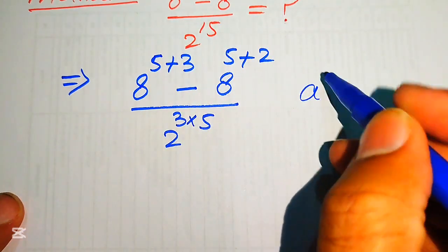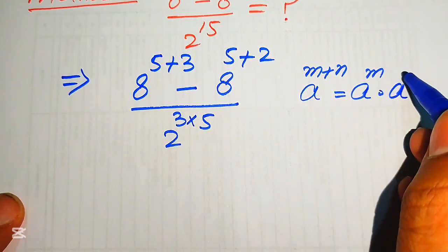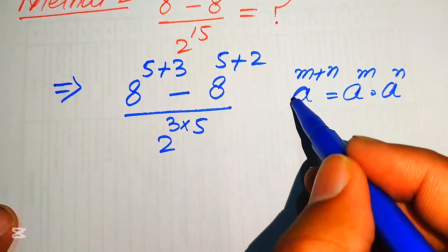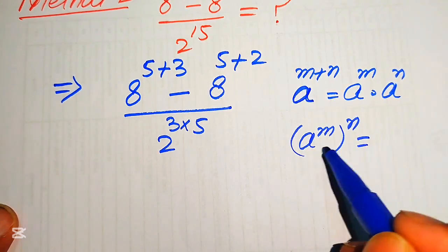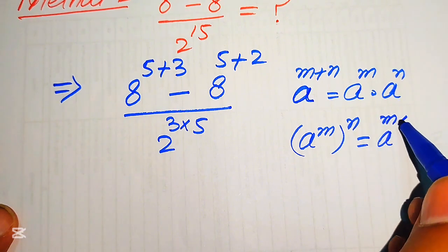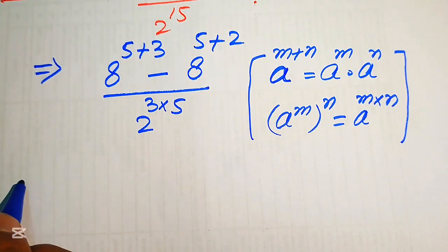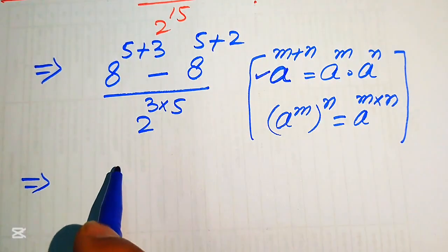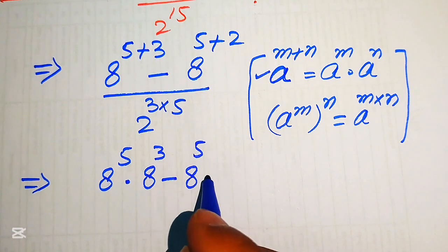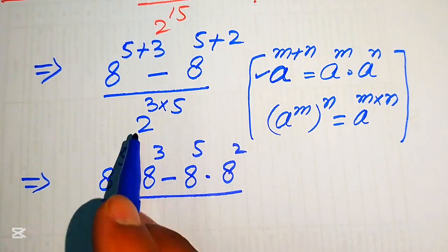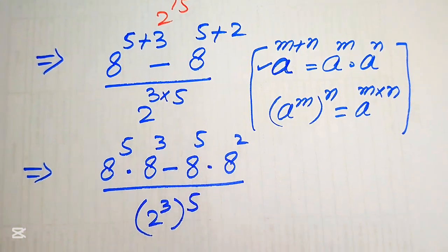In the numerator we apply the exponent law: a to the power of m plus n equals a to the power of m multiplied by a to the power of n. In the denominator we apply the law: a to the power of m multiplied by n equals a to the power of m, to the power of n. The numerator becomes 8 to the power of 5 times 8 cubed, minus 8 to the power of 5 times 8 squared, and the denominator becomes 2 cubed to the power of 5.